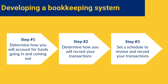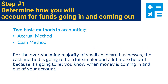Let's look at three basic steps in developing a bookkeeping system. Step 1: Determine how you will account for funds coming in and going out. There are two basic methods in accounting. One is an accrual method, which is more complex and is based on when an expense or revenue is taken on or accrued. For example, if using the accrual method, the moment you receive your credit card bill, the amount owed would be taken from your assets versus when you actually pay the bill.